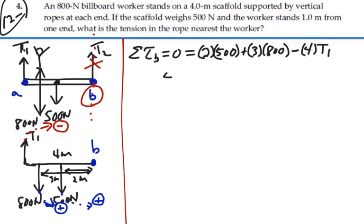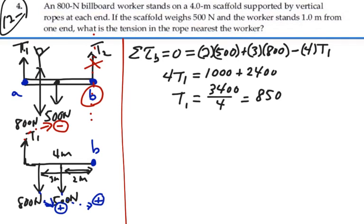So we have 4 times tension 1 is equal to 1,000 plus 2,400. Or tension 1 is equal to 3,400 divided by 4, which would be 850 Newtons. So the force in the, or the tension in the cord nearest the worker is 850 Newtons. Answer.